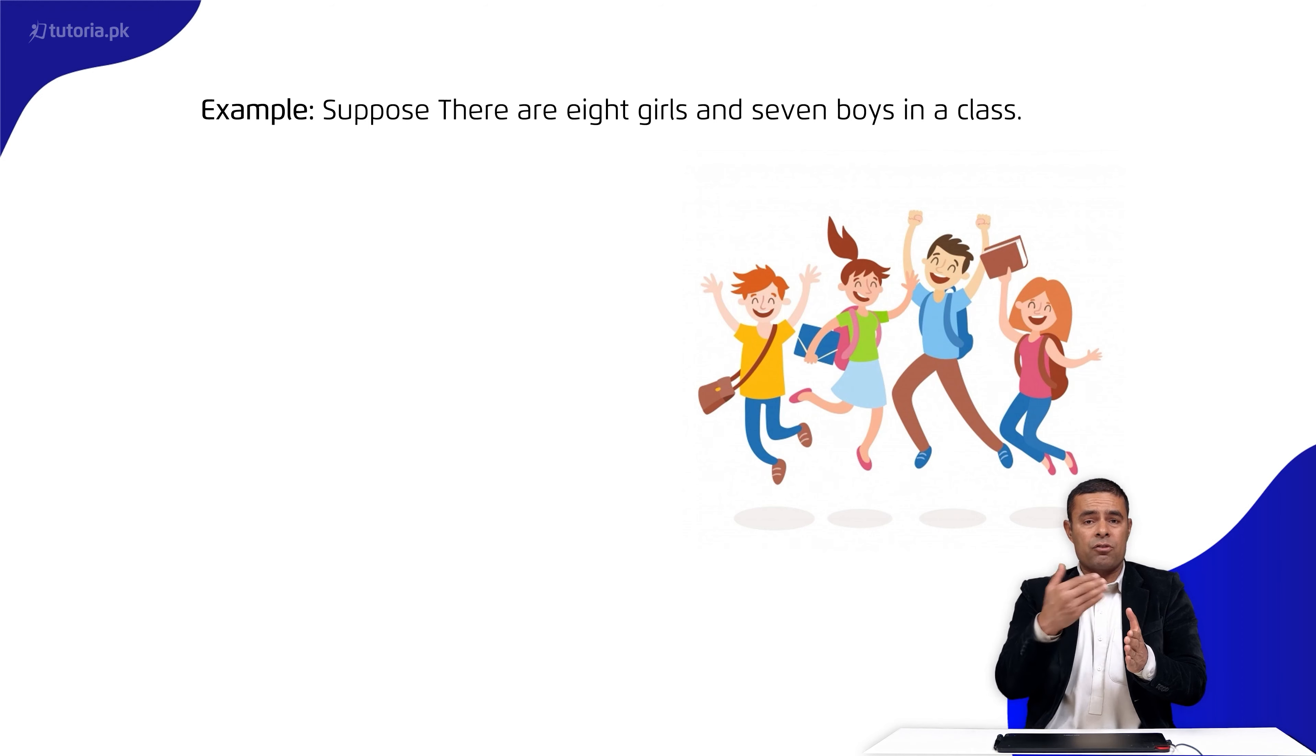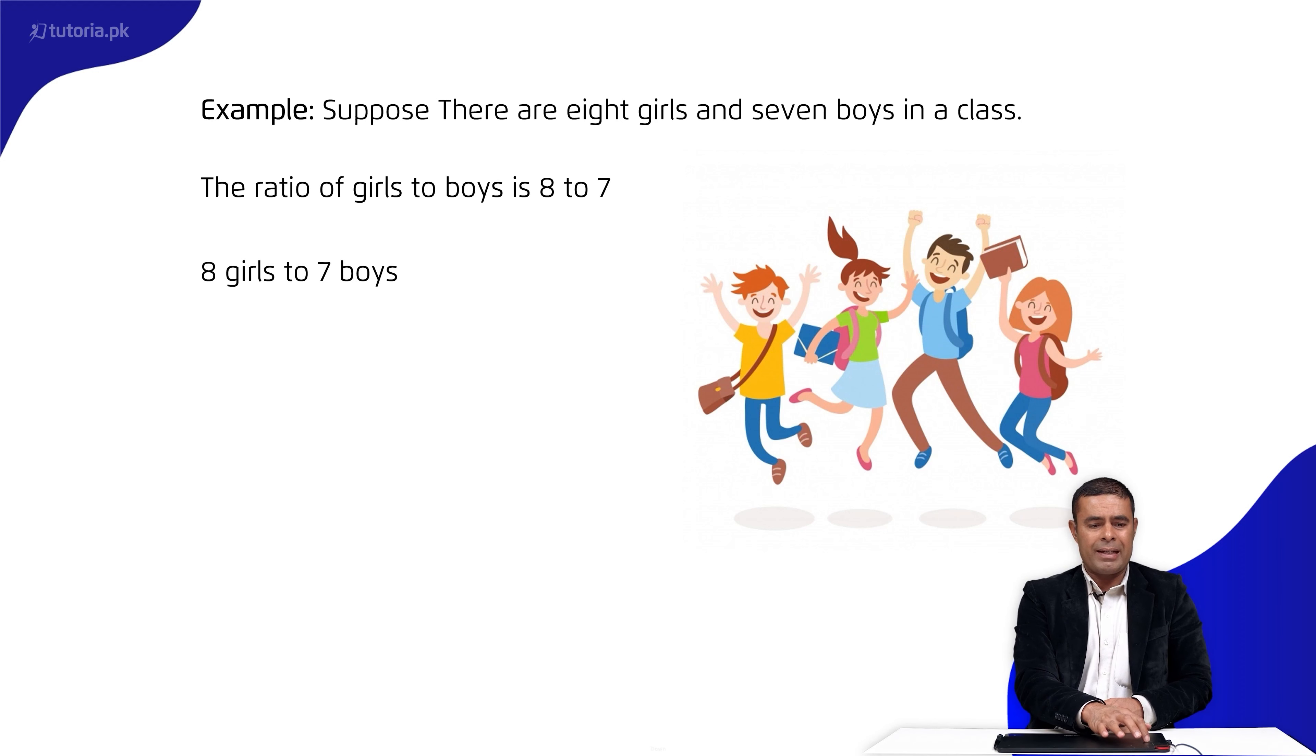For example, the ratio of girls to boys. The ratio of girls to boys is eight to seven. Girls to boys: eight to seven. We can write this as eight ratio seven, or in fraction form as eight over seven.